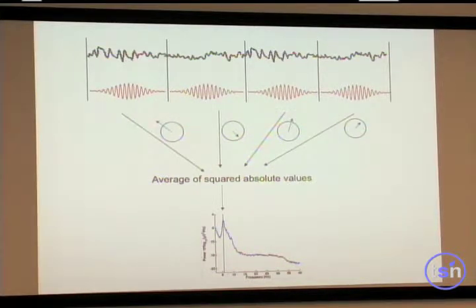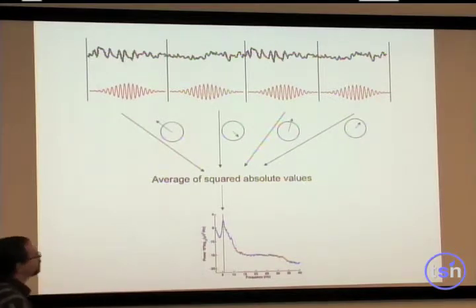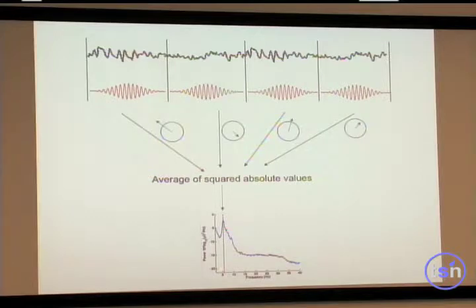And you're going to get this time frequency estimate. Here I just represented the real number. And I get a time frequency estimate for this window at a given frequency. Then I get a time frequency estimate for this window at the same frequency, this window, this window, et cetera. Then I'm going to average the square values of the length. And this is going to give me my power at this specific frequency.